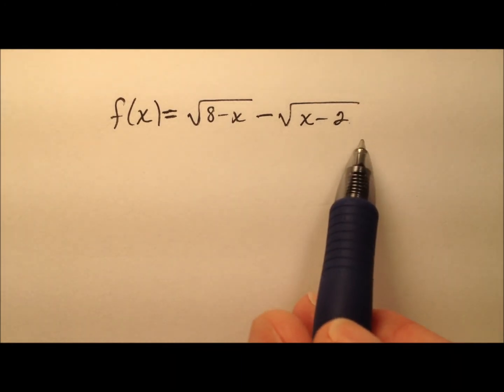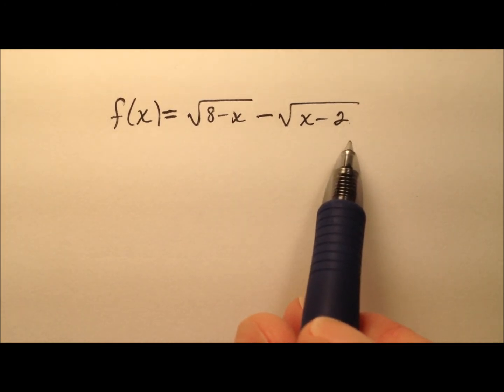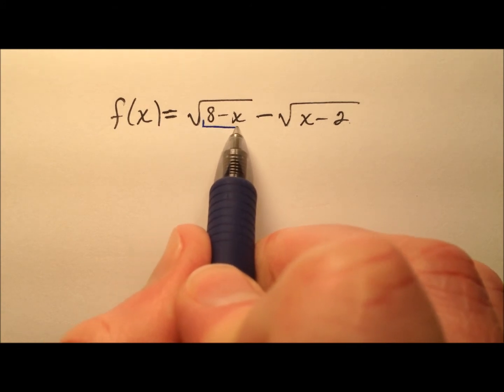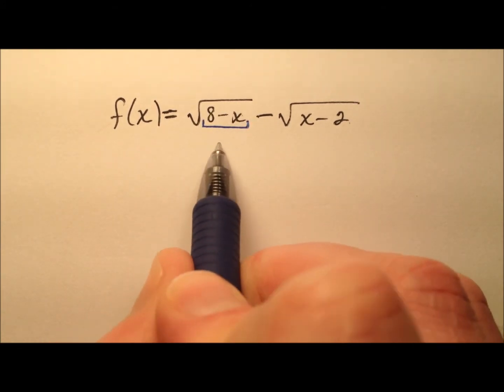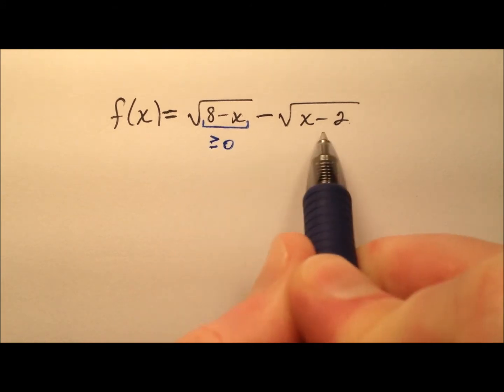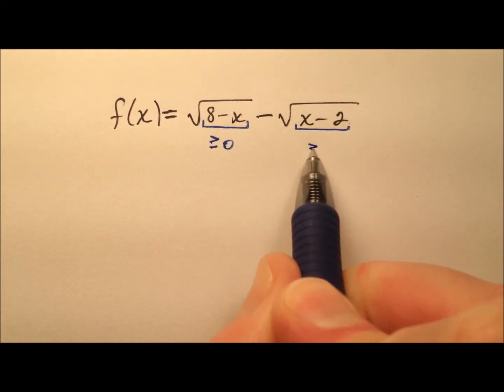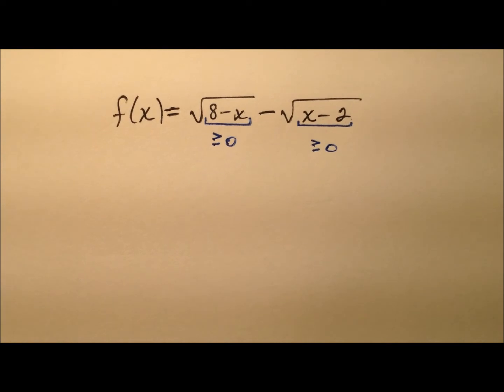So we know that when we deal with square roots and domain specifically, we just need to have these radicands, or the expressions under the radical, they need to be greater than or equal to 0 because we cannot have a negative value under a square root because then it's no longer a real number.